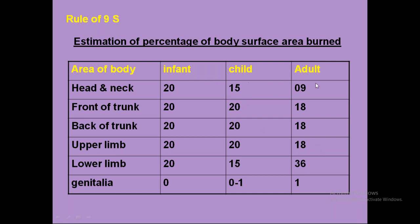The percentage allocation is different for children and infants. For infants (less than one year), it is called the Rule of 20: head and neck 20%, front of trunk 20%, back of trunk 20%, upper limbs 20%, lower limbs 20%, genitalia 0%. For children (greater than 2 years up to about 14–18 years), it is a mixture: head and neck 15%, front of trunk 20%, back of trunk 20%, upper limbs 20%, lower limbs 15%, genitalia 0–1%. The Rule of Nine is very important and has been asked many times in examinations for adults to determine percentage of burns on body surface area.